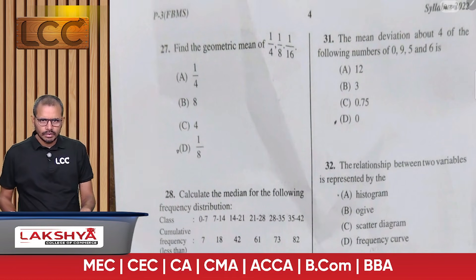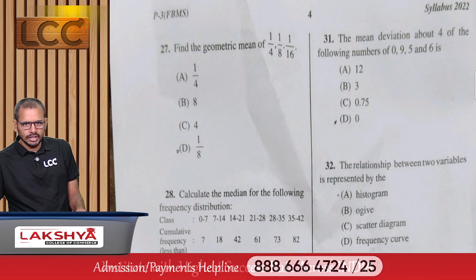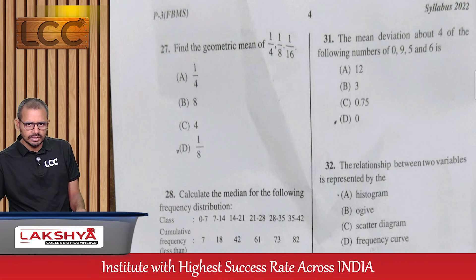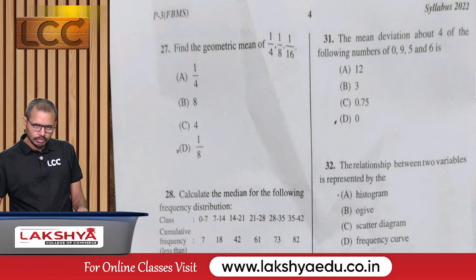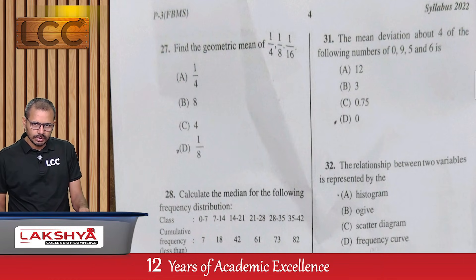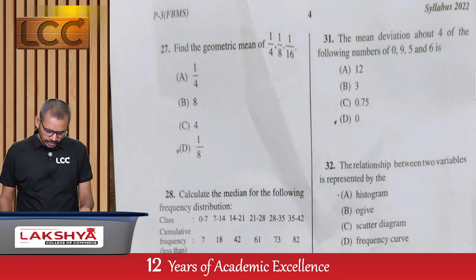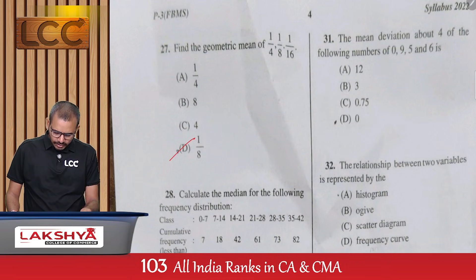Question 27: The geometric mean of 1/4, 1/8, and 1/16. The geometric mean is the cube root of the product of three numbers — option D.